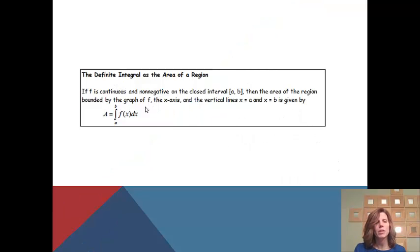When we're looking at this definition, I actually already used it in my previous video, but I'll go over it again. If f is continuous and non-negative on the closed interval a to b, then the area of the region bounded by the graph of f, the x-axis, and the vertical lines x equals a and x equals b is given by this formula. The antiderivative basically tells us that we're looking for the area under the curve.